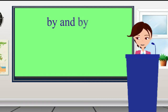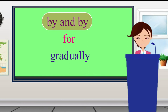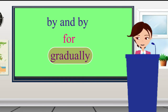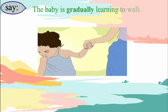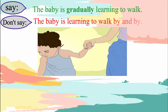By and by means soon or after a little while. Gradually means slowly or little by little. For example, we say: the baby is gradually learning to walk. We don't say: the baby is learning to walk by and by — this is incorrect.